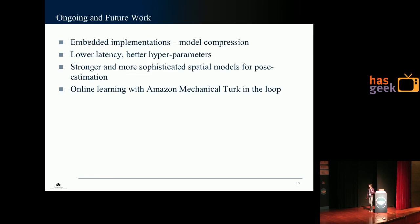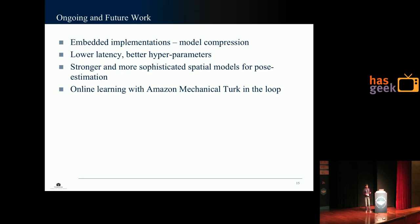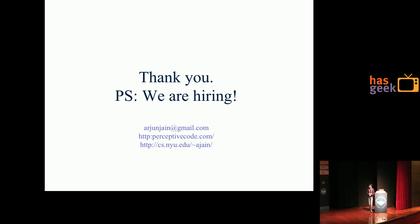Currently we are working on embedded applications — the same model adapted to work on embedded devices such as mobile phones or cars — focusing on model compression, lower latency, and better hyperparameters. We are also working towards stronger and more sophisticated spatial models. Finally, we are doing online learning with Amazon Mechanical Turk in the loop: you install a camera with our best model, and when the model makes a mistake and we detect it as an error case, it gets automatically labeled by Mechanical Turk. Once we have enough annotations, we push a new model onto the device. We are hiring — contact arjunjan at gmail.com.